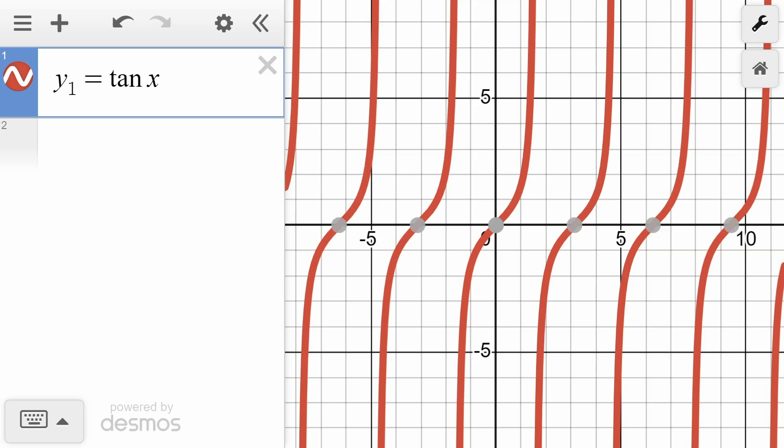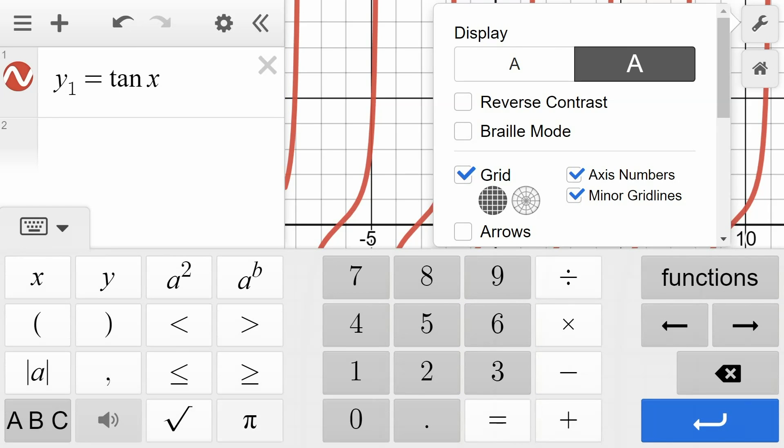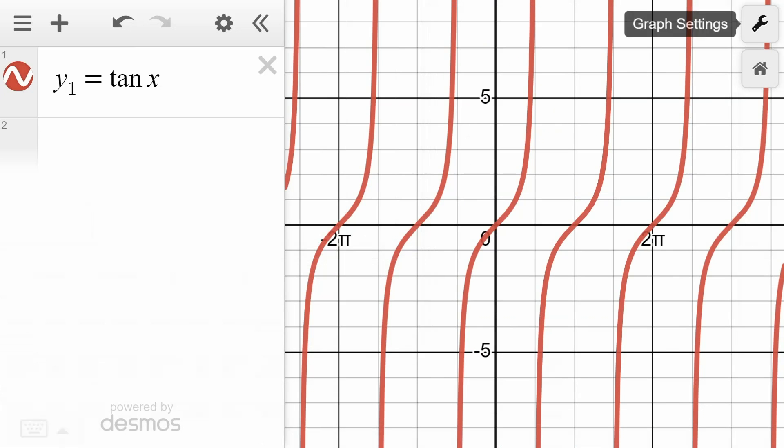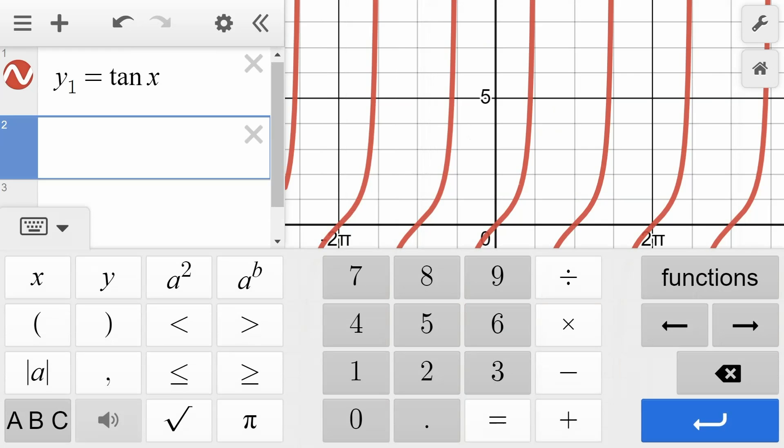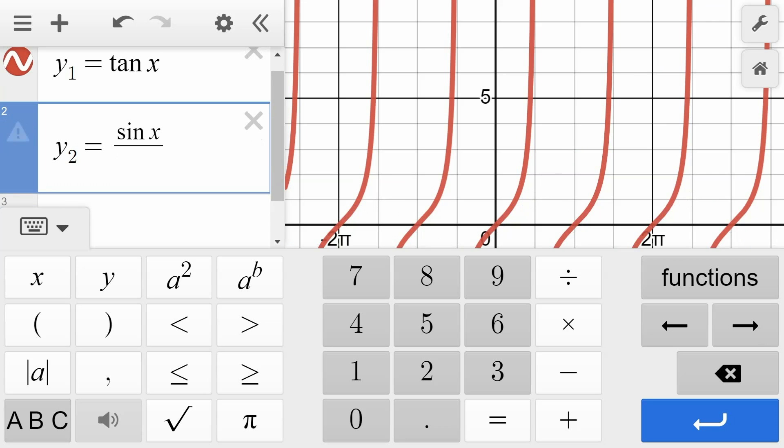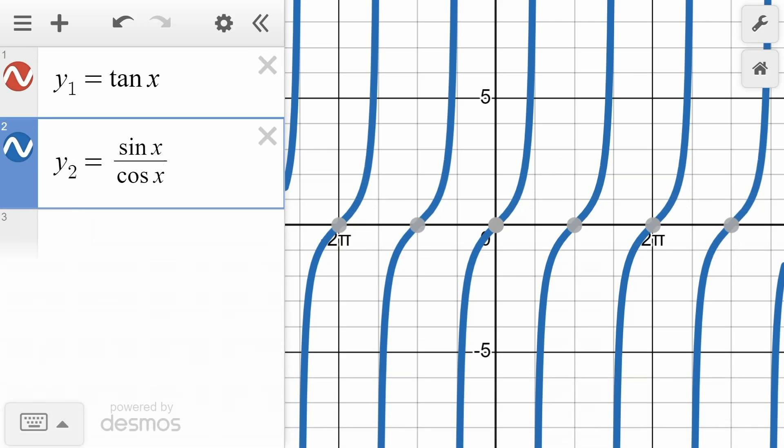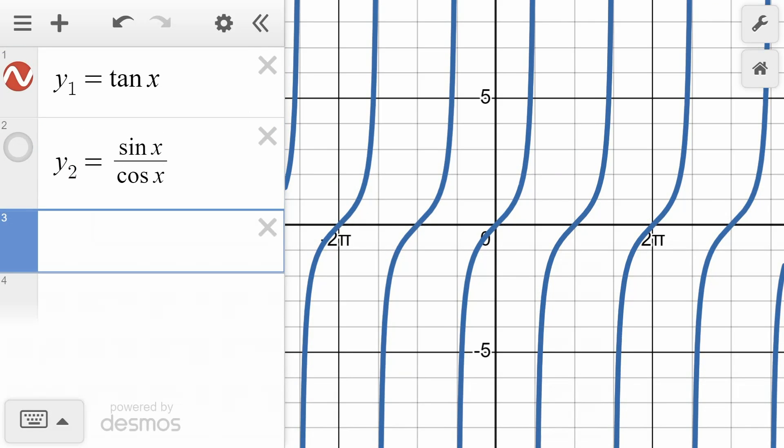Now, maybe we'll go in here and change the horizontal axis so that it shows the values in terms of pi, because that's a little easier to make sense of, not that we're really going to be looking too closely at the individual values. And then I'm going to put the other function, y2, as sine x divided by cos x. All right, so you see, when you look at those two graphs, it sure appears that they're exactly the same graph.